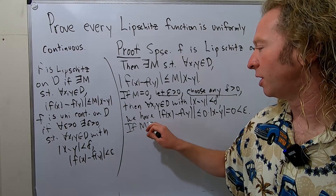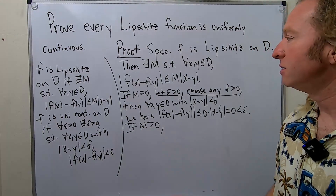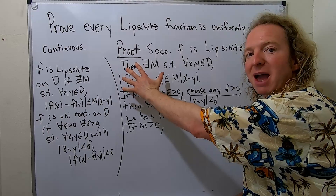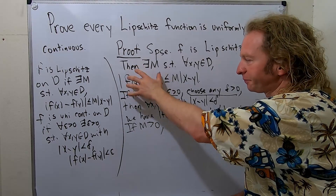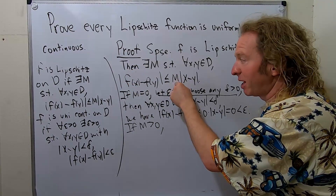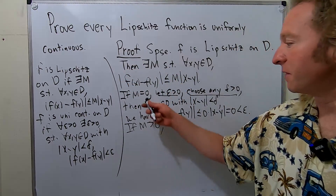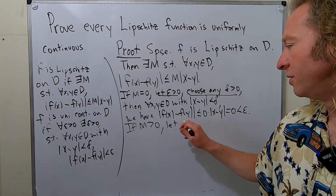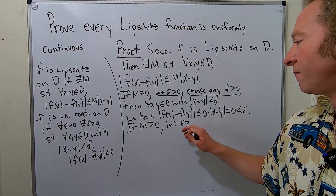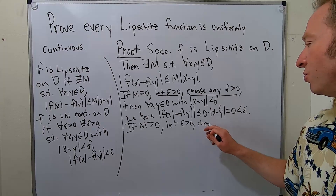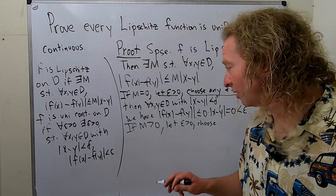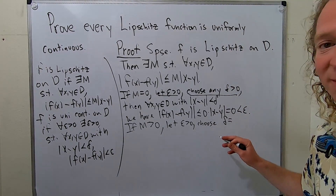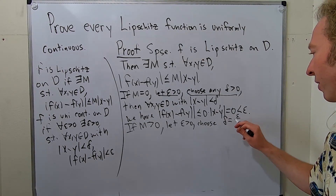If M is not equal to zero — in other words, if it's positive — note that M can't be negative because this is a magnitude, so it's zero or positive. If it's not zero it must be positive. So let epsilon be greater than zero and we're going to choose our delta. Since M is positive, delta has to be positive, so we can set delta equals epsilon over M.